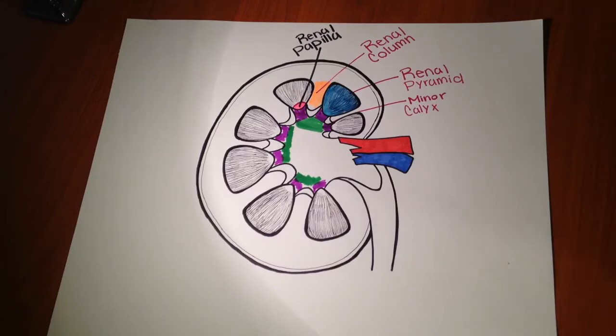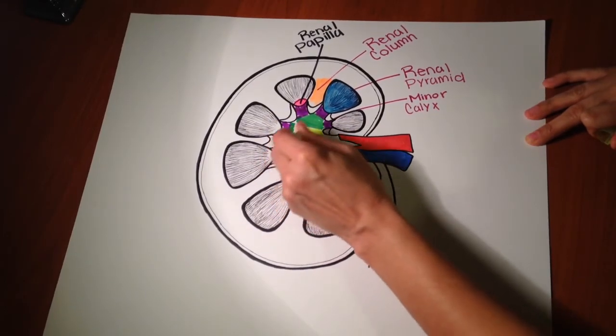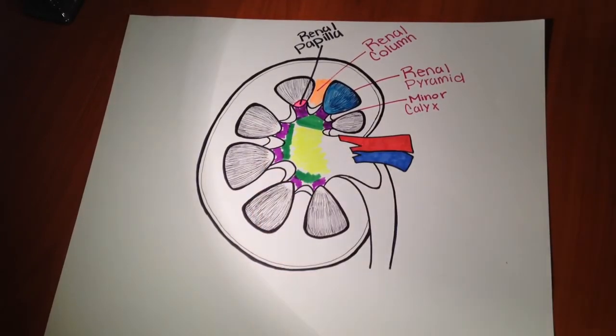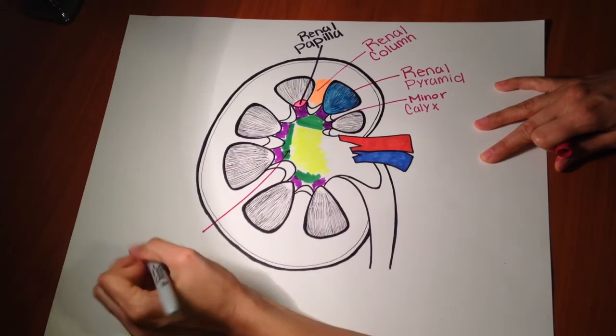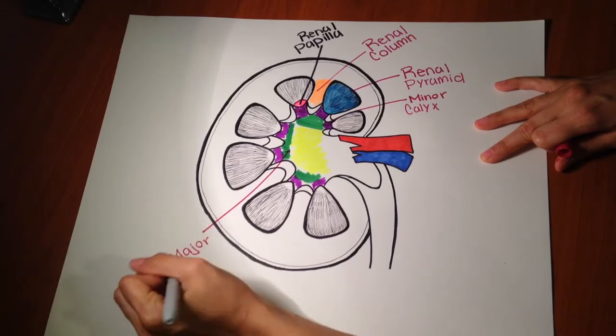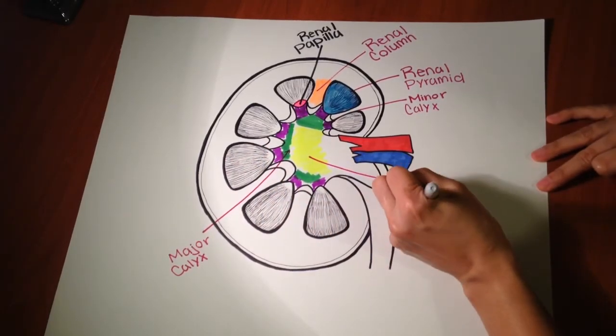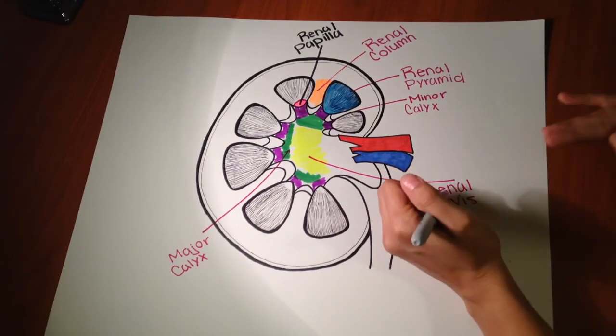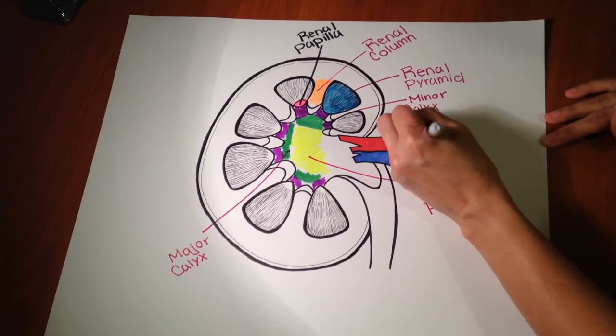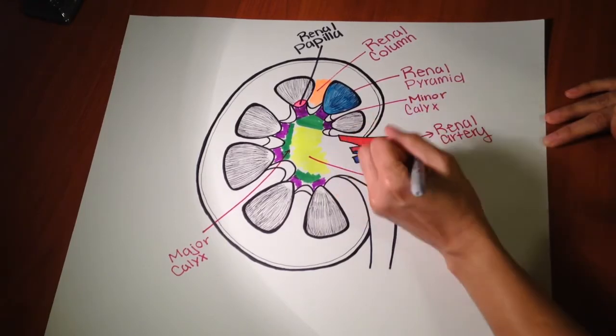So this middle portion over here that basically connects everything together, this is the renal pelvis. Let me draw this over here. This is a major calyx and this portion, this is the renal pelvis. This is the renal artery. This one is the renal vein.